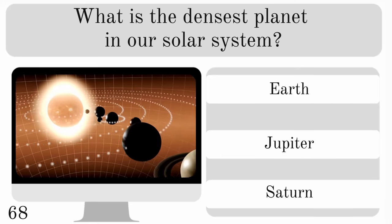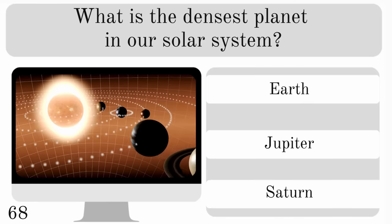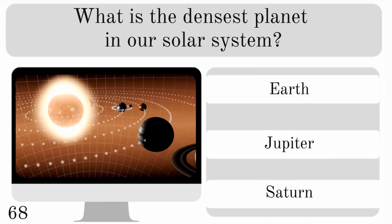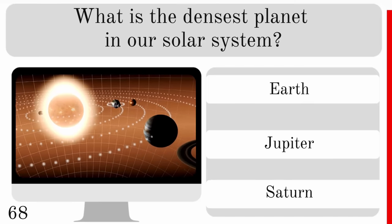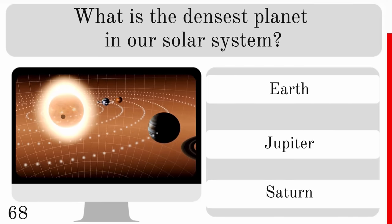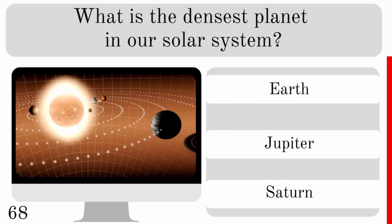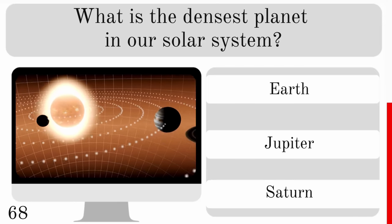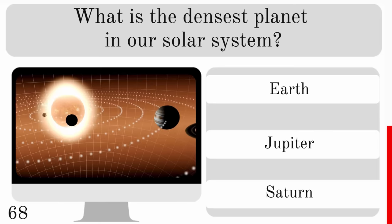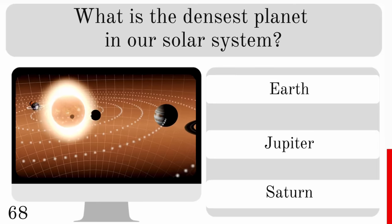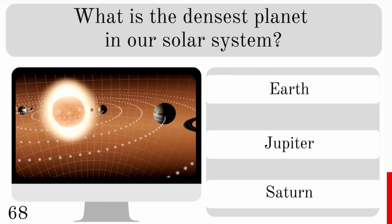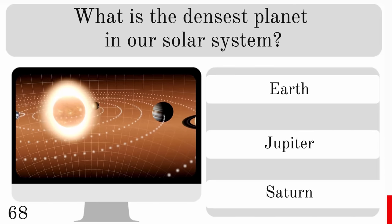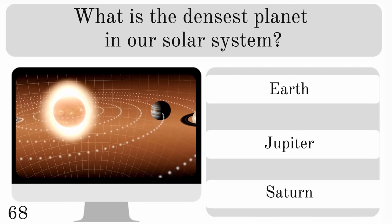What is the densest planet in our solar system? Is it Earth, Jupiter or Saturn? The answer is Earth.